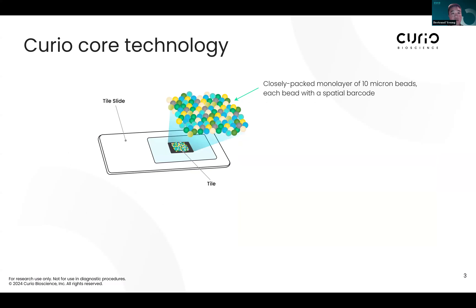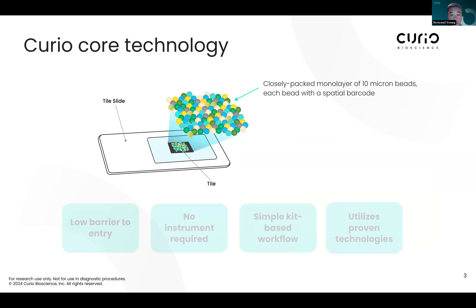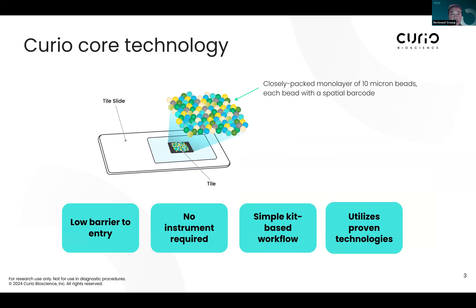We're doing that with our core technology, which consists of a monolayer of 10 micron beads, each with its own unique spatial barcode. This technology was originally based off SlideSeq v2 from the Broad Institute, from Evan McCosco and Fei Chen's labs. It enables customers to access spatial transcriptomics very easily. This doesn't require any instrument — it's just a kit that you purchase and generate libraries that you eventually sequence and process through our pipelines.